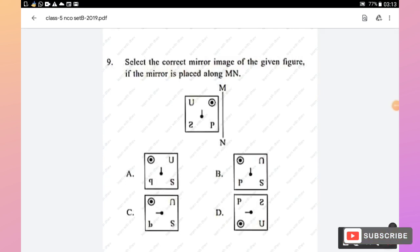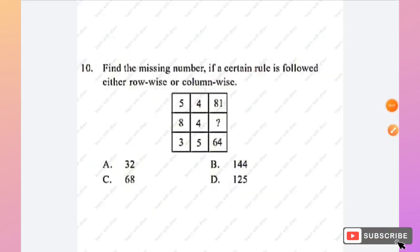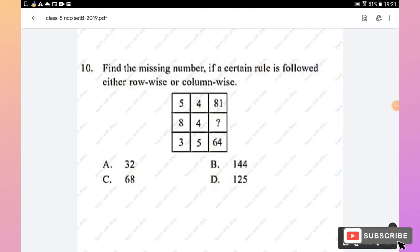Question 9: Select the correct mirror image of the given figure if the mirror is placed along MN. In a mirror, the left side becomes the right side and the right becomes the left, while the top and bottom remain the same. Hence option A is the right answer. Question 10: Find the missing number using the rule row-wise or column-wise. 5+4=9, 9²=81; 3+5=8, 8²=64; 8+4=12, 12²=144. Option B is the right answer.